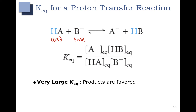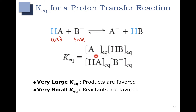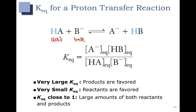If we have a very large Keq, that implies that the products are favored, because the products are on the top. If those concentrations are big, that's going to give you a big Keq value. If you have a small Keq, that means that your reactants are favored, because if those concentrations are very big, Keq is going to become very small. If Keq is close to 1, this means that you have similar amounts of reactants and products, because the concentrations of products and reactants would be approximately equal.